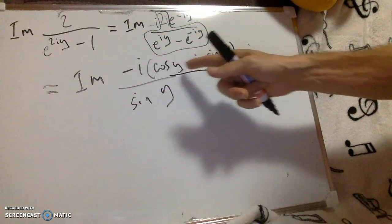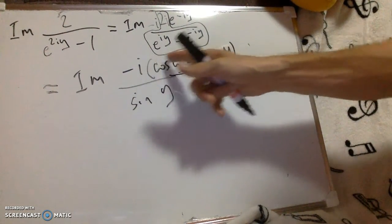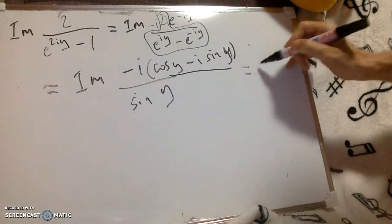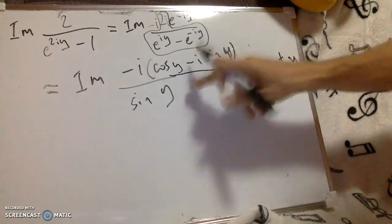And in the end, I want the imaginary part of this, so I can forget this bit here. I just want the imaginary part, which finally is minus cos y over sine, which is minus cot y.